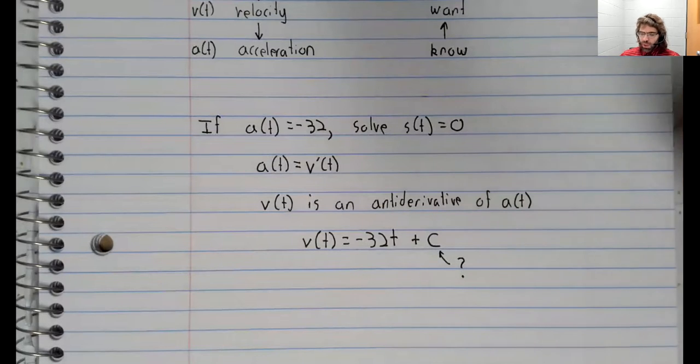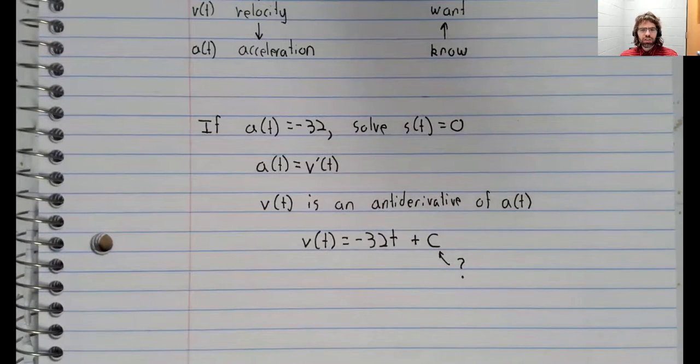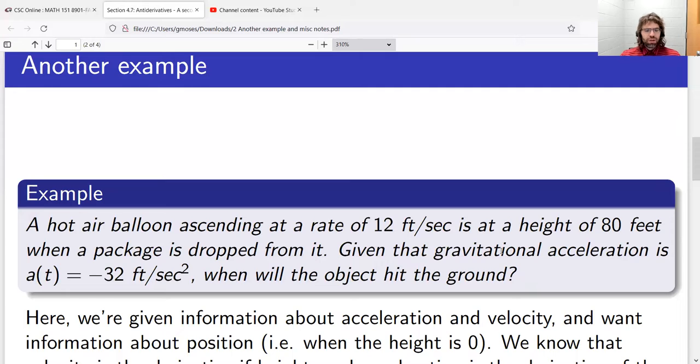But what could this constant be? Let's go back to this question. What information haven't we used yet? Well, we haven't used this 80 feet, but probably more to the point, 12 feet per second is a velocity. We're trying to get information about a velocity.